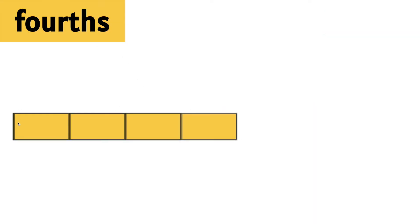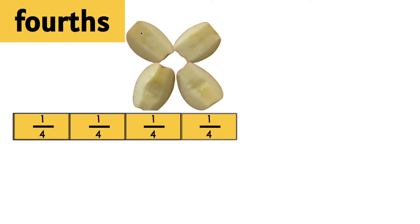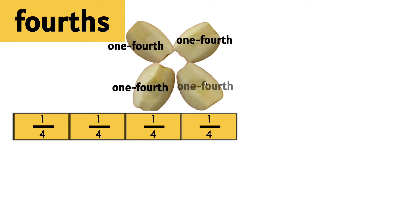Fourths. Here we have a whole that has one, two, three, four equal parts. Each one is worth one fourth. Here we have an apple that was cut or split into four equal parts. Each one is worth one fourth.